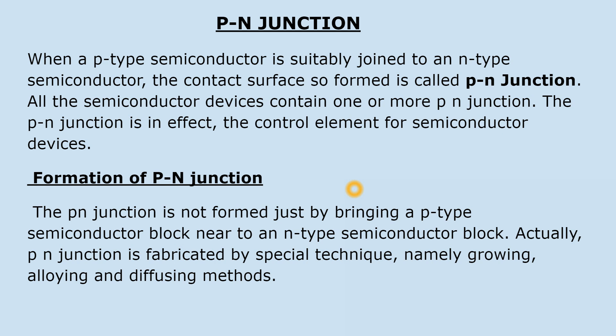All the semiconductor devices contain one or more P-N junctions. हर एक semiconductor device में एक या एक से अधिक P-N junction होते हैं। The P-N junction is in fact the control element for semiconductor devices. The P-N junction is not formed just by bringing a P-type semiconductor block near to an N-type semiconductor block. Actually, P-N junction is fabricated by special techniques।